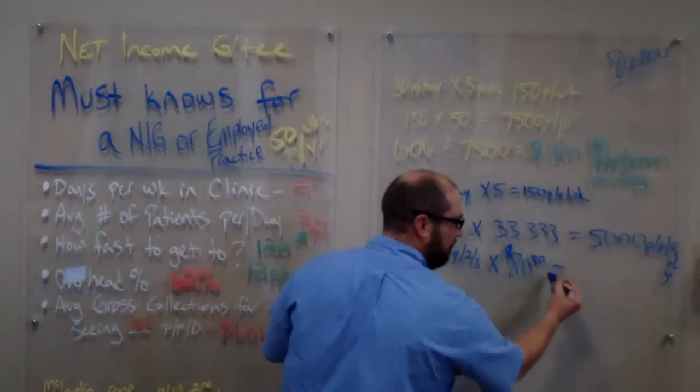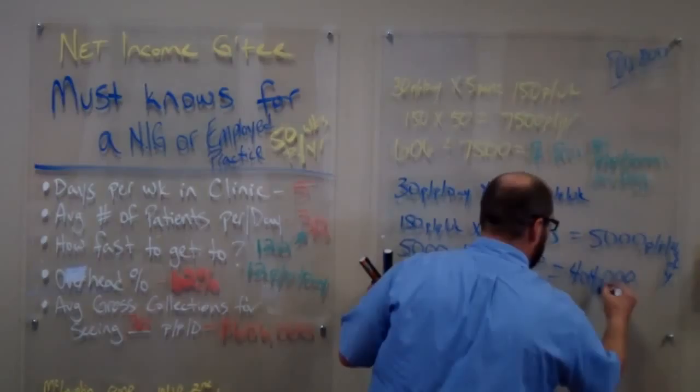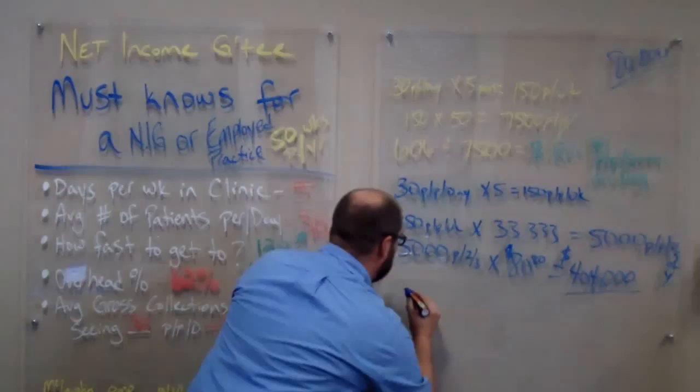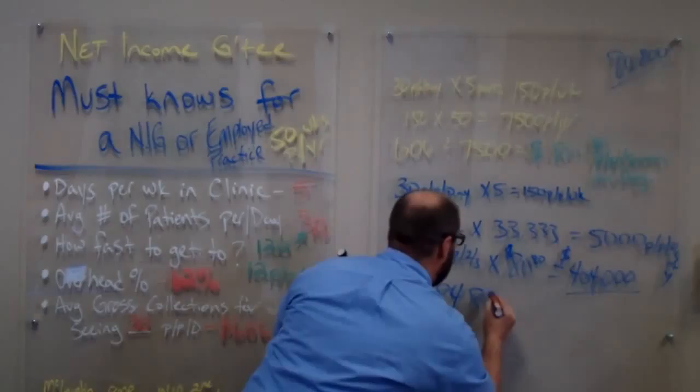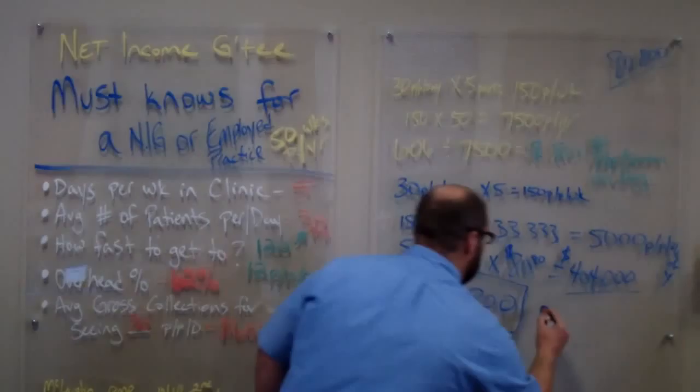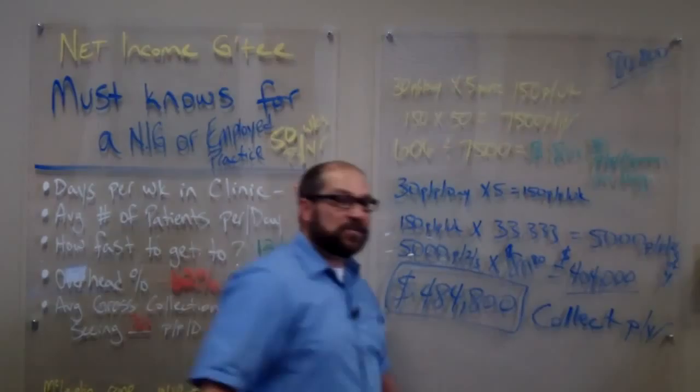Now we take the 5,000 patients per two-thirds times $80.80, and we come out with $404,000. Now we need to take this number and add it to that number, which is going to give us a grand total of $484,800.